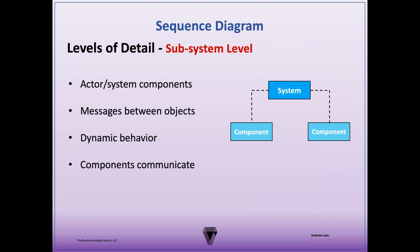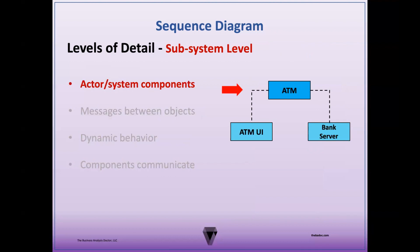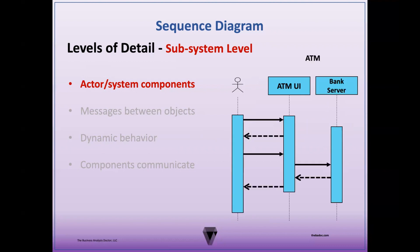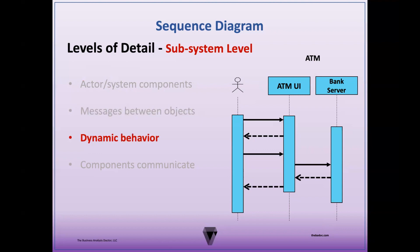Next, we have the subsystem level. Here, the system is decomposed into the various system components within it. For example, an ATM system might include the ATM user interface, the bank server, and other components like a bank database. The subsystem level sequence diagram is the most commonly used level and focuses on how the external actors and the various system components interact to accomplish a specific use case. It captures the order of messages between objects, the flow of control, and the time sequence of these interactions.